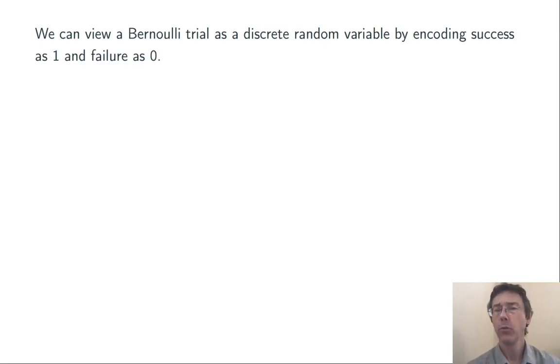We can view a Bernoulli trial as a discrete random variable by encoding success as 1 and failure as 0. If we do that, we get a very simple probability distribution. X can be 0 or 1. The probability of getting a 1 is p and the probability of getting a 0 is 1 minus p because 0 and 1 are complementary events here.